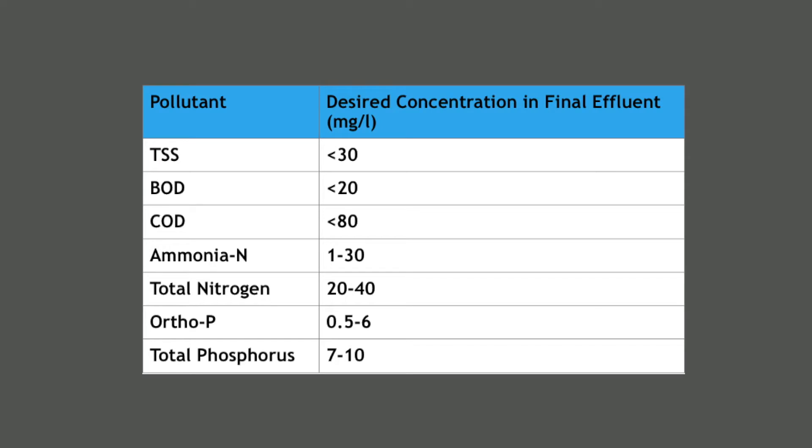These could be BOD — Biochemical Oxygen Demand — COD — Chemical Oxygen Demand — Ammonia, Total Nitrogen, and more recently as they've been introduced, Total Phosphorus Consent.